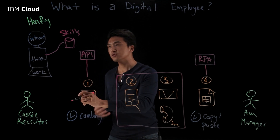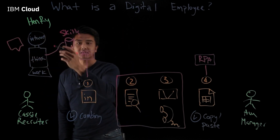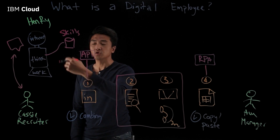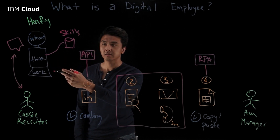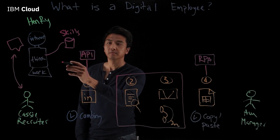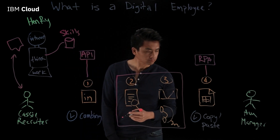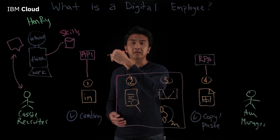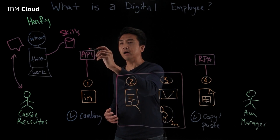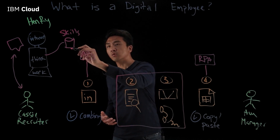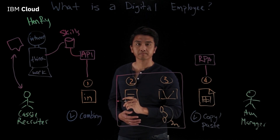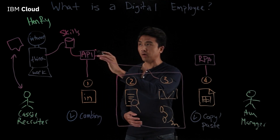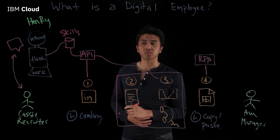So all Cassie has to do is ask. Cassie asks Henry to do something and Henry, in turn, uses his AI to interpret that ask and then match it to the skills he has to do the work for Cassie. In this example, Cassie can simply ask Henry to do the candidate search in LinkedIn. Henry can interpret that and quickly match it to the LinkedIn skill he has, calling the LinkedIn API to do the search. He can even go one step further and message the right candidates and schedule the screening interviews.